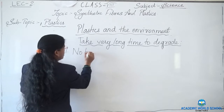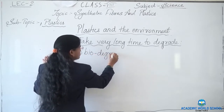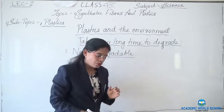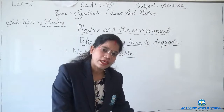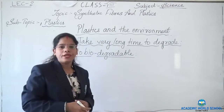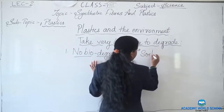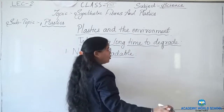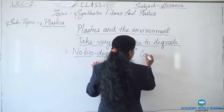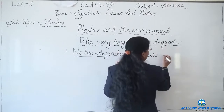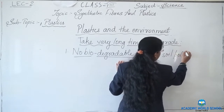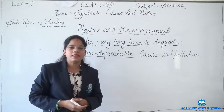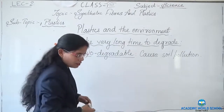The first point is plastics are non-biodegradable. Because plastics are non-biodegradable, if they go into the soil they cause soil pollution. They cannot be broken down easily by microorganisms. So they remain in the soil for a long time, cause soil pollution, and affect the life of microorganisms and plants living in that place.